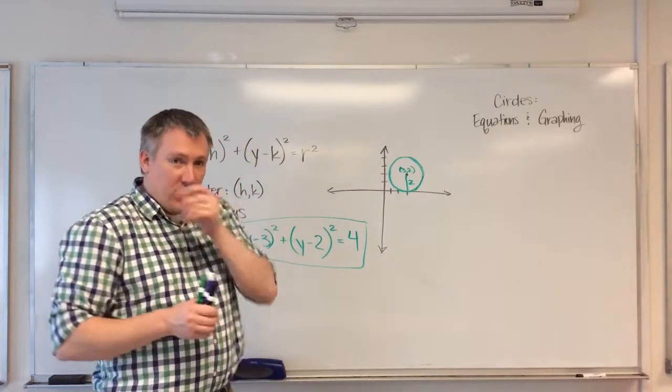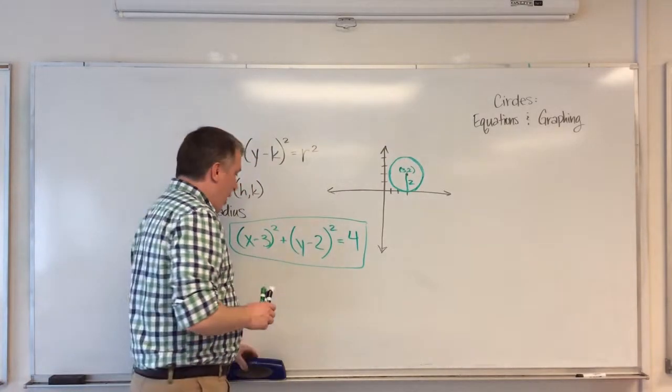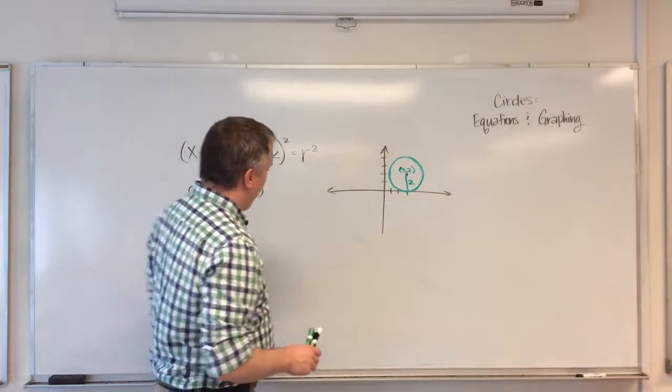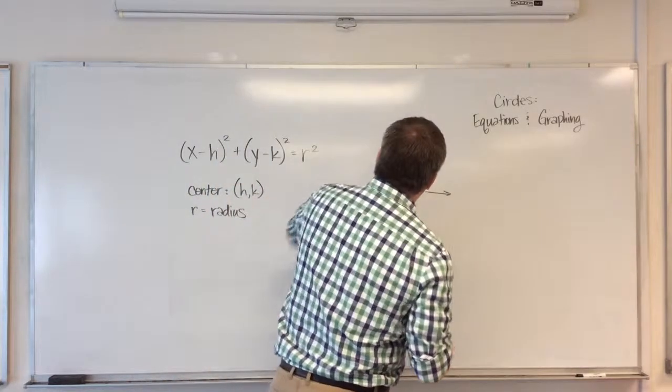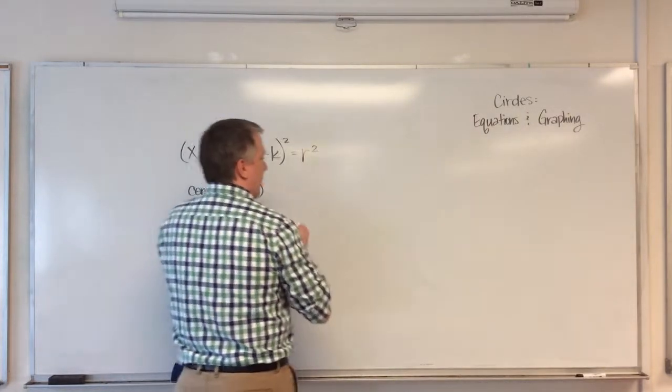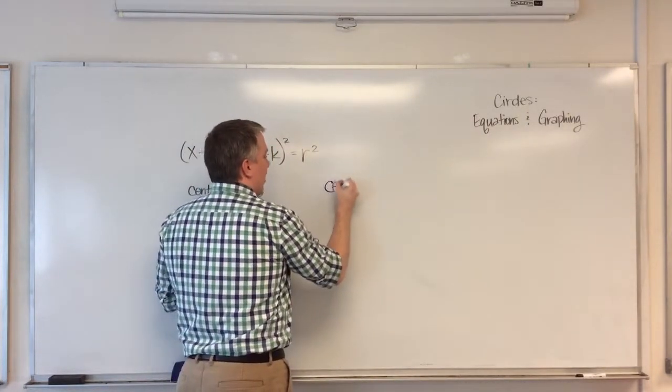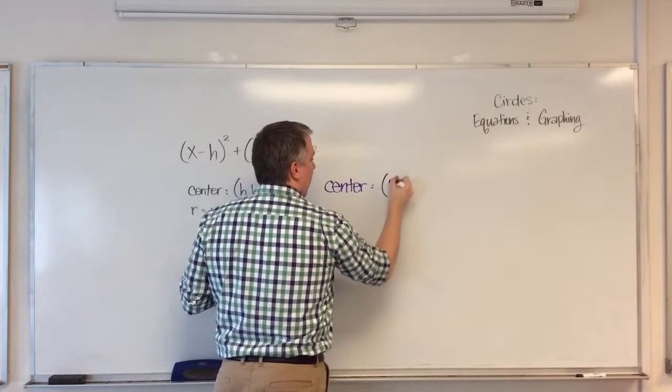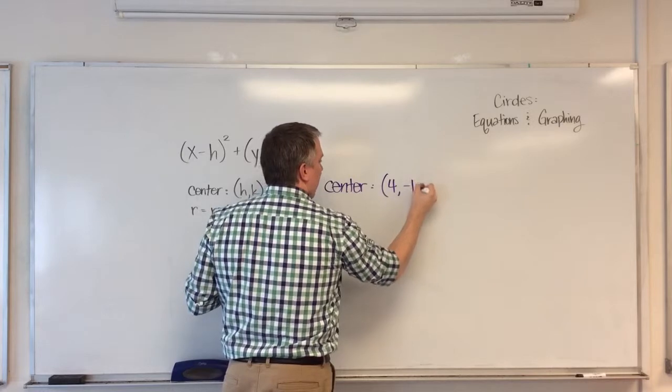That's the equation of that circle. Now, there are some other sort of tricky ways that they can present problems. And one of them is to give you the center and another point. So they might say something like this.